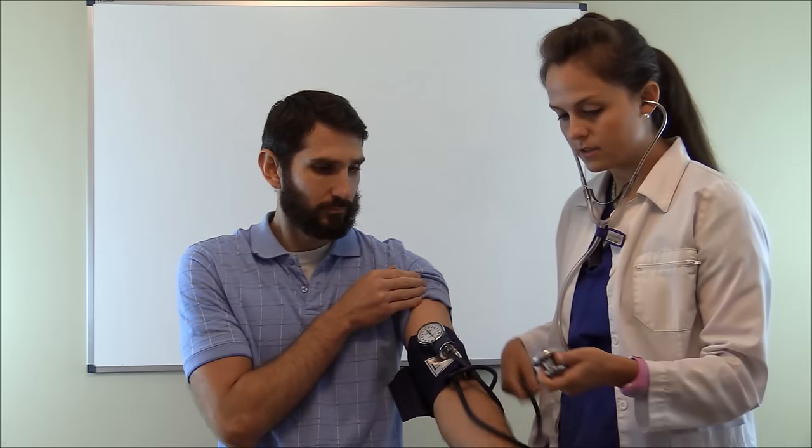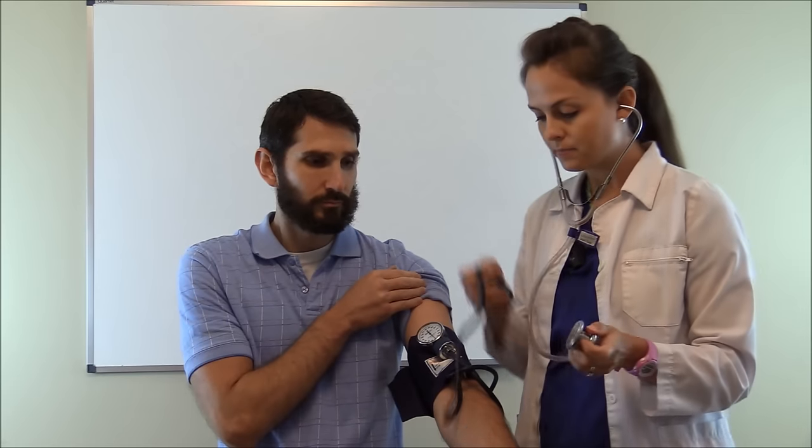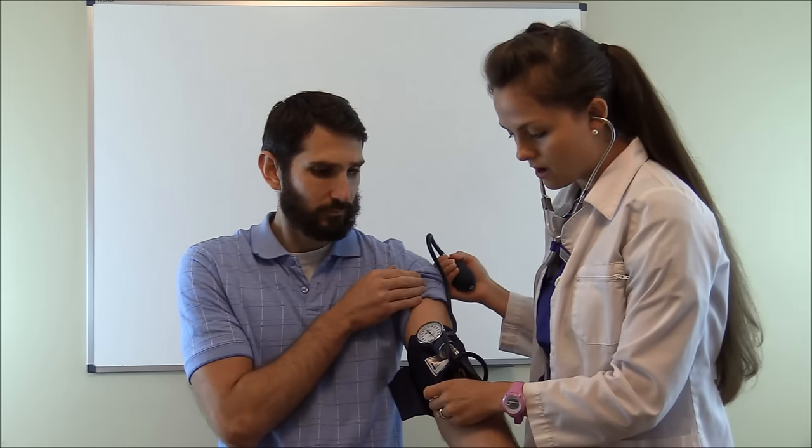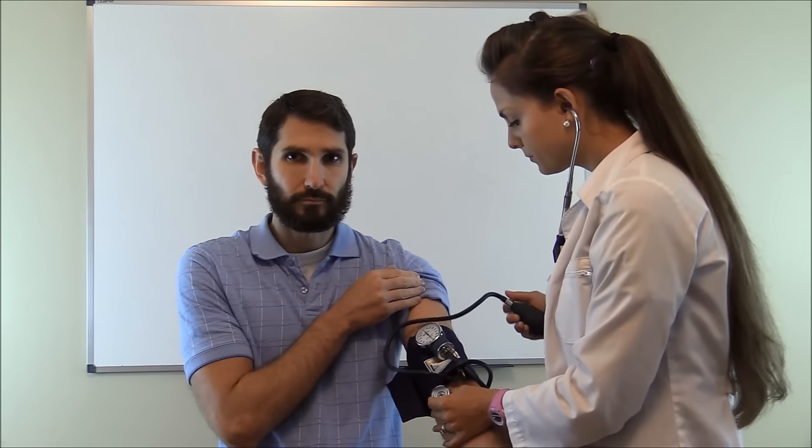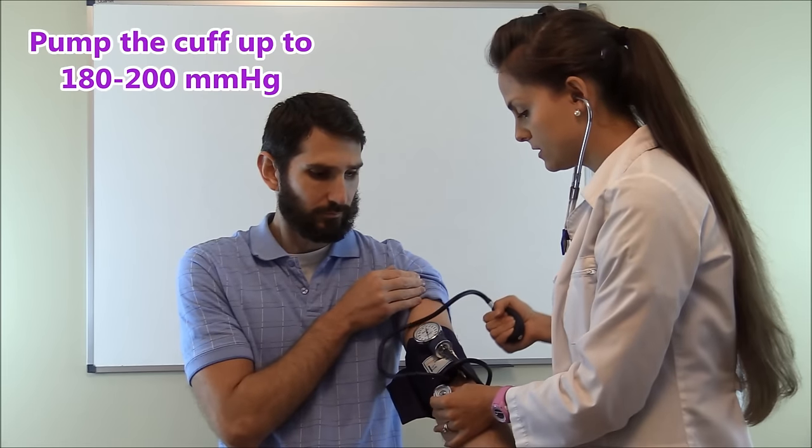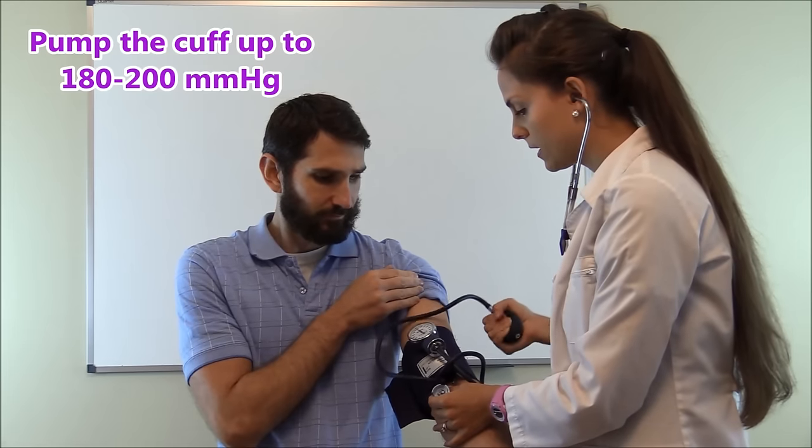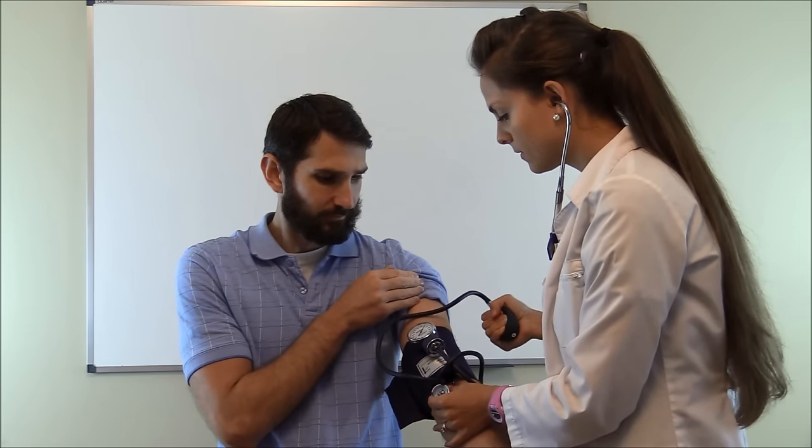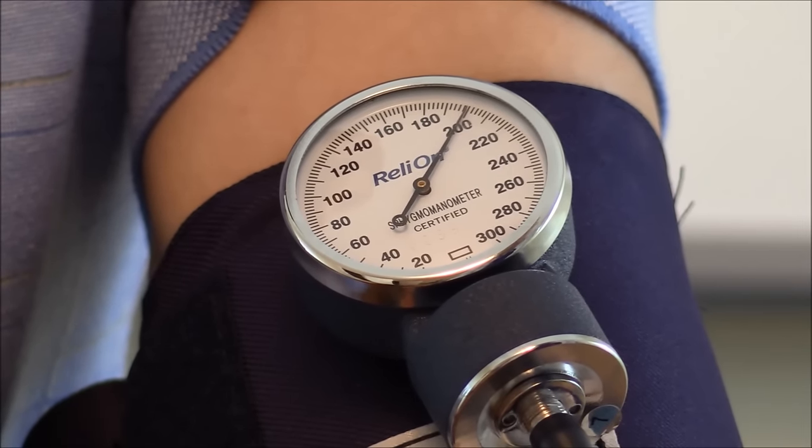Put your stethoscope in your ears and you're going to use the diaphragm of your stethoscope and you're just going to place it over where you heard that brachial artery. Then you're going to blow the cuff up to about 180 to 200 millimeters of mercury or until you don't hear that brachial artery anymore. We're blowing it up to about 200 millimeters of mercury.